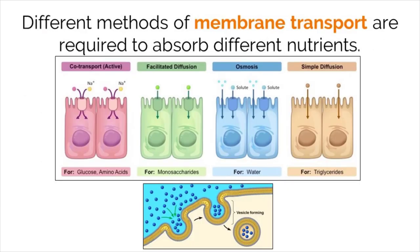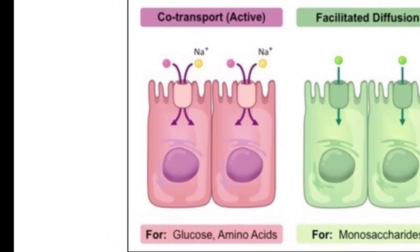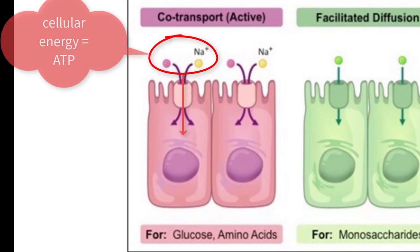Absorption of nutrients occurs in the small intestine. In order for these nutrients to be absorbed, they need to be taken in by cells and therefore will be moved across cell membranes. Different nutrients require different transport methods based on their size and structure. The first is co-transport, a type of transport that pairs two molecules together and moves them across the membrane using cellular energy. One is actively moved and the other tags along passively. This occurs for molecules like glucose and amino acids.